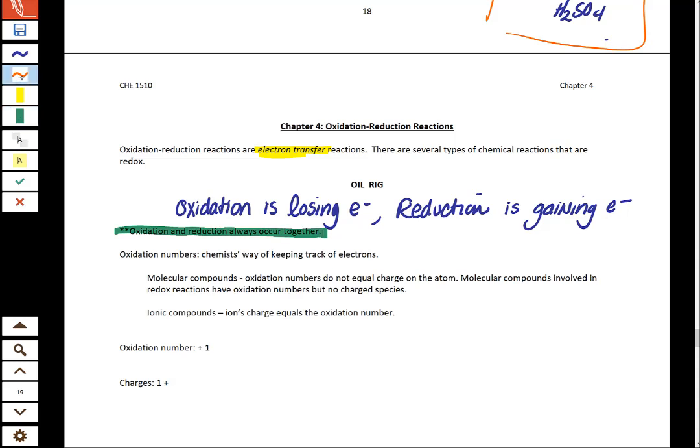So when we look at what an oxidation number is, it is just a chemist's way of keeping track of electrons. And here's the thing that's going to get real confusing. Sometimes oxidation numbers make sense, like in ionic compounds, where your ion's charge equals the oxidation number. In molecular compounds, these are compounds that don't have any charged species. So it's going to look really weird when we start putting oxidation numbers to them.